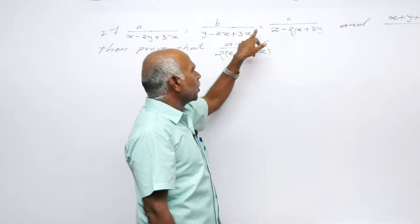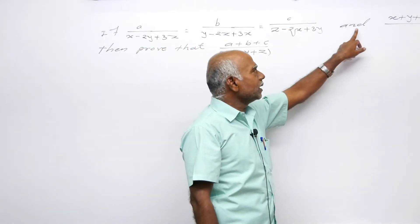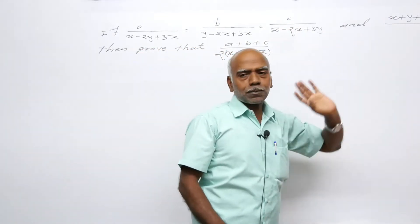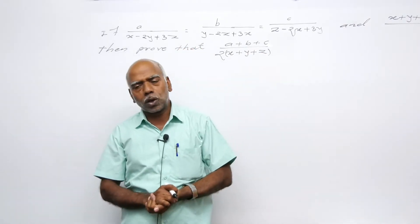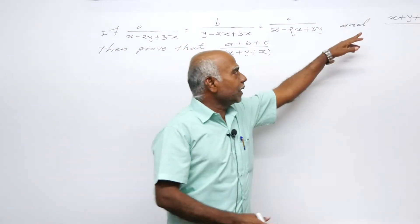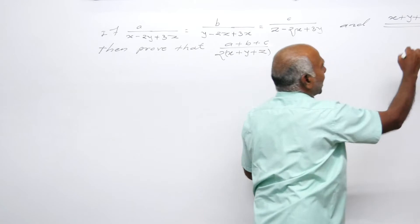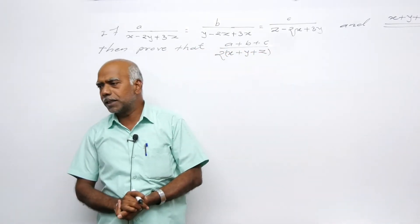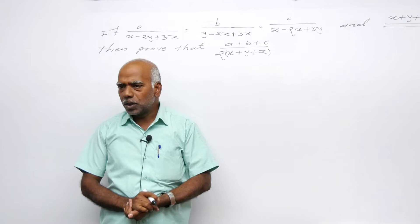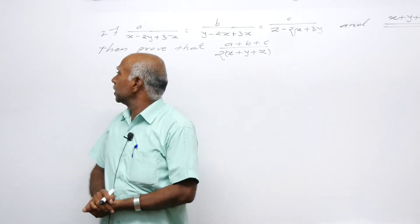If a upon x is equal to b upon y is equal to c upon z, then x plus y plus z is equal to not zero. This is an important condition.